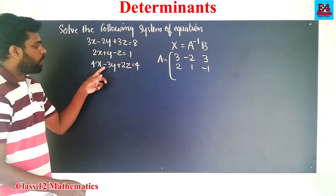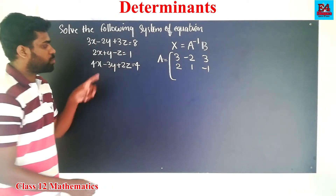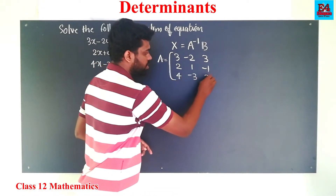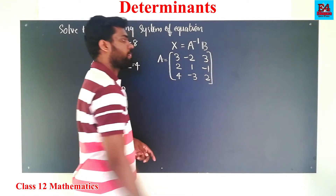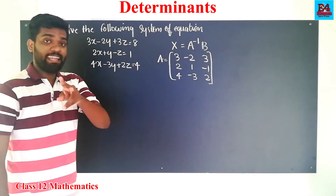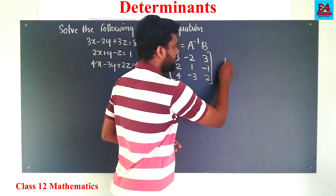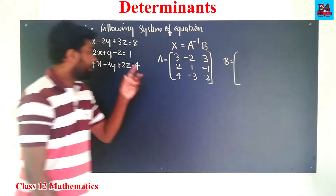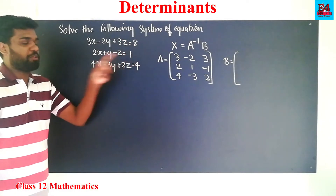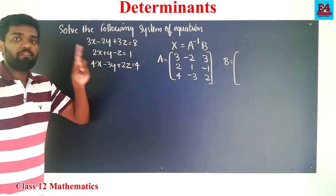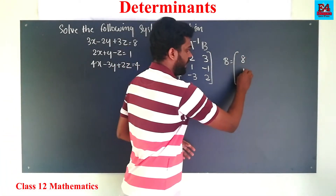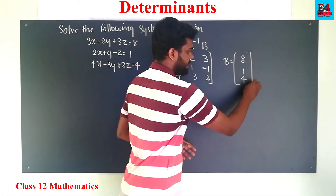Then the last row: 4, minus 3, 2. Now for matrix B: B is equal to the column vector 8, 1, 4.